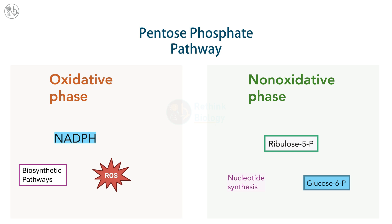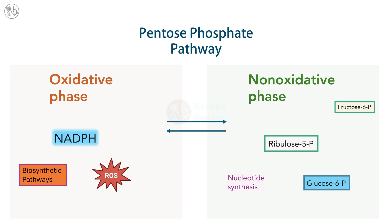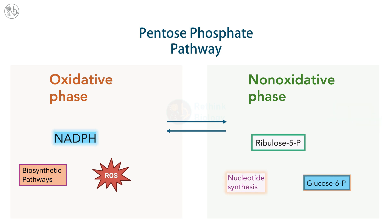Flux through the oxidative and non-oxidative phases of the pentose phosphate pathway is regulated to meet three distinct metabolic states of the cell. First, if increased NADPH is required for biosynthetic pathways or to provide reducing power for detoxification, then fructose 6-phosphate and glyceraldehyde 3-phosphate are used to resynthesize glucose 6-phosphate, thereby maintaining flux through the oxidative phase. Second, if nucleotide pools need to be replenished because of high rates of DNA and RNA synthesis, then the bulk of ribulose 5-phosphate is converted into ribose 5-phosphate, stimulating nucleotide biosynthesis.